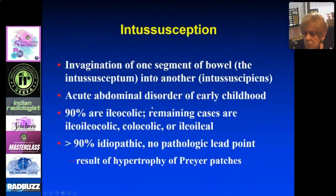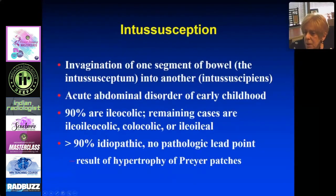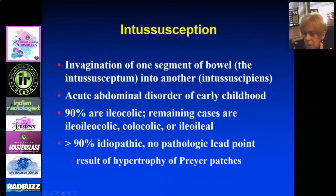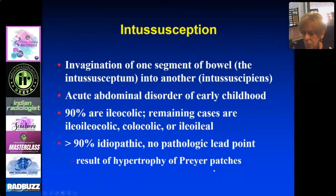Intussusception is a cause of acute pain — it's prolapse of one segment of bowel, the intussusceptum, into another. It causes acute pain in early childhood, typically under three years. 90% are ileocolic; the remainder may be ileocolic, colocolic, or ileoileal. 90% are idiopathic with no lead point, due to hypertrophy of Peyer's patches and small nodes.